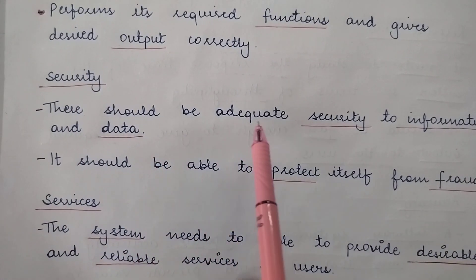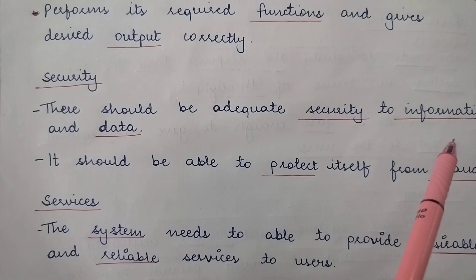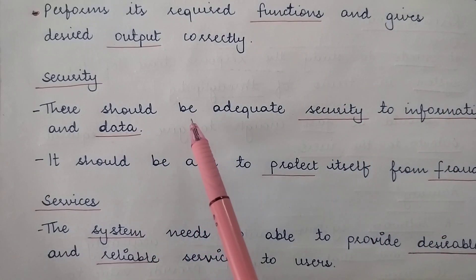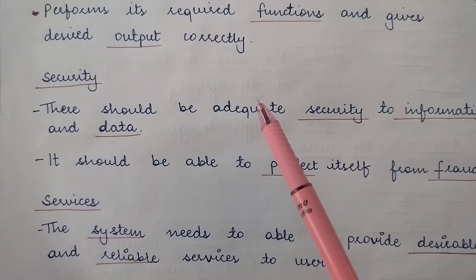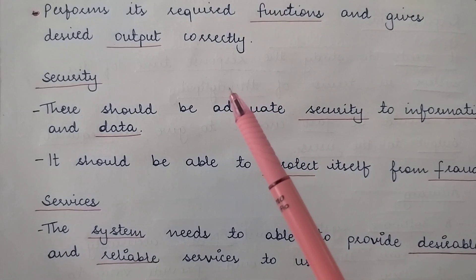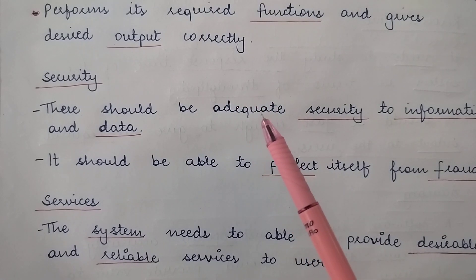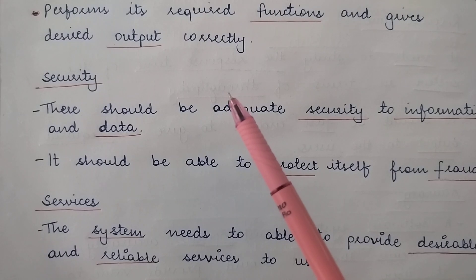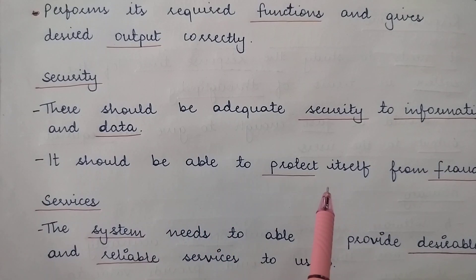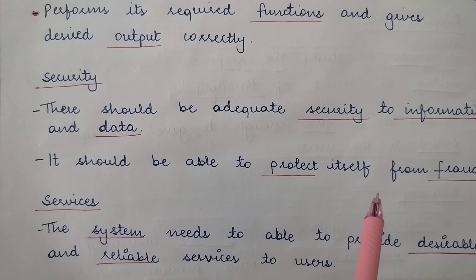Then comes security. Basically, there should be adequate security to information and data. Whatever information and data is being provided by the system, it is confidential and private to that particular organization and is not for everyone to access — especially outside the organization. So the system must be able to protect itself from any kind of fraud or threat.